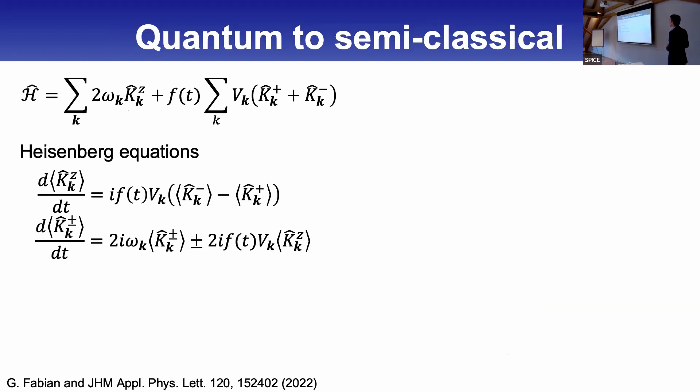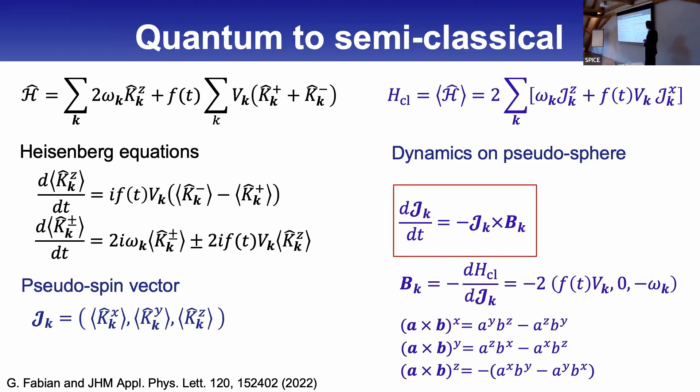For the spin algebra we have a minus sign when there is a Z component. Here we have a plus sign. Spin conservation is on the unit sphere, whereas the invariant for SU(1,1) has a minus sign for the Z component. Where spins live on a closed surface, a sphere, these K operators live on a hyperbolic sphere, which is actually extended.